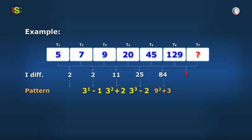3 cubed minus 2, and 9 squared plus 3. The powers are increasing: 3 to the power 1, 3 to the power 2, 3 to the power 3, and 9 squared or 3 to the power 4.